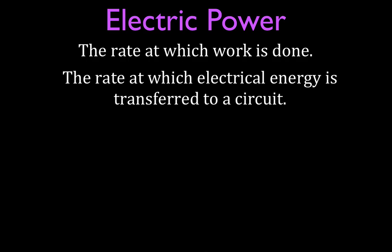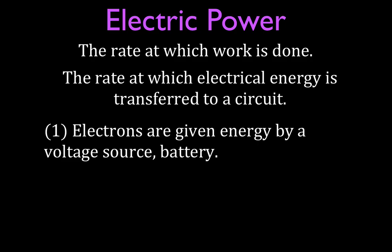For electric power, we like to give a little bit more specific definition. It's the rate at which electrical energy is transferred to a circuit or to an element in a circuit. What happens is, in a circuit, for electric power, you have electrons, and the electrons get their energy from a voltage source, typically a battery.